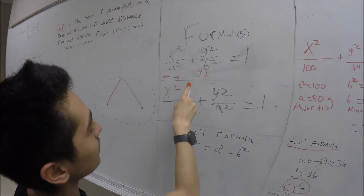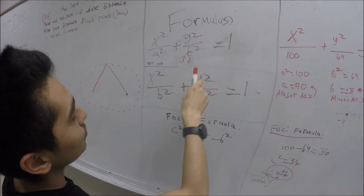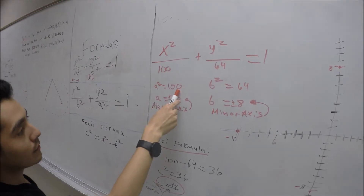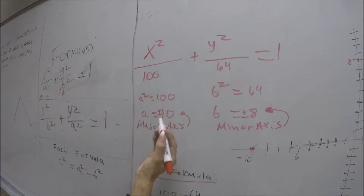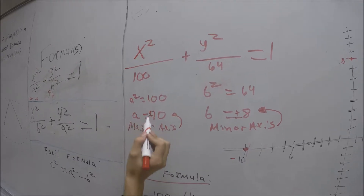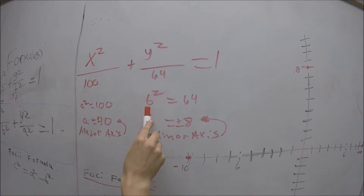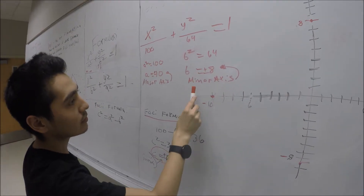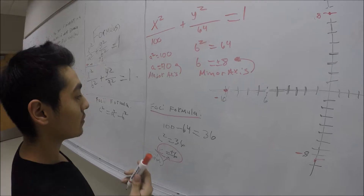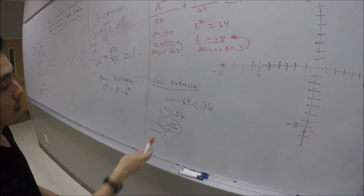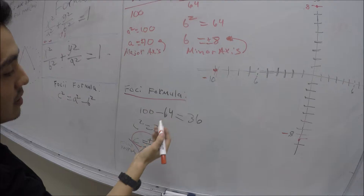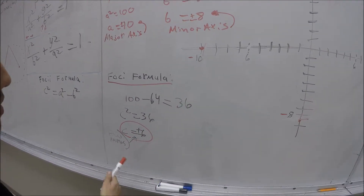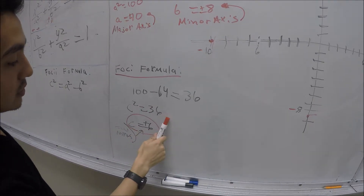So then you should have the points (7, negative 2), (negative 1, negative 2), (3, 2), and (3, negative 6). By plugging in these points we can get our circle. Our center is (3, negative 2), located right here. The point (7, negative 2) is right here; (negative 1, negative 2) is right here; (3, 2) is right here; and (3, negative 6) is over here. So then we create the circle.